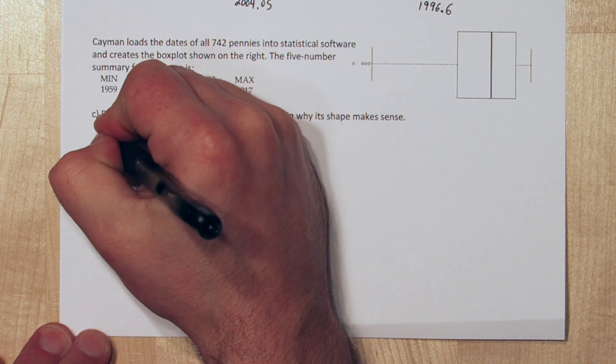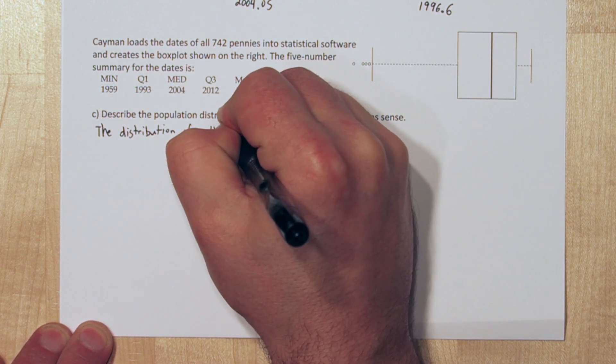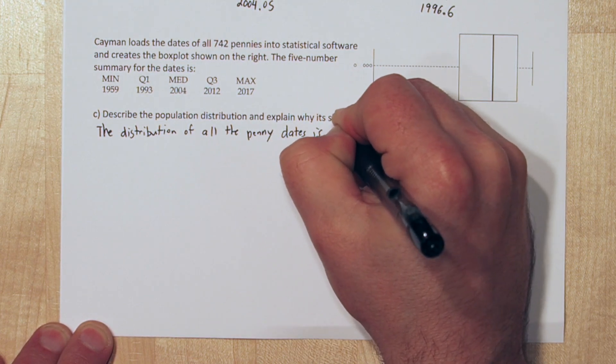Any time you're describing a population, you need to talk about the shape, center, spread, and outliers. The acronym SOCS, S-O-C-S, might help.